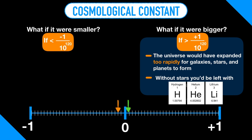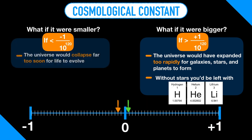Weinberg says, on the other hand, if the cosmological constant had been a little smaller, less than negative 1 over 10 to the 120th power, then the universe would collapse far too soon for life to evolve.